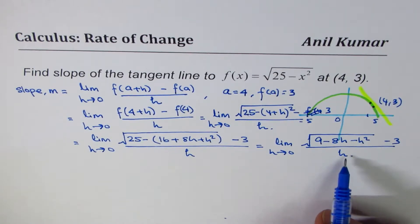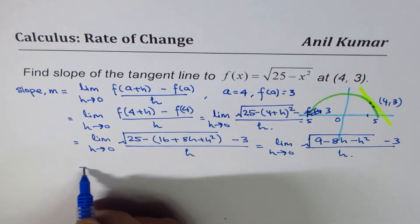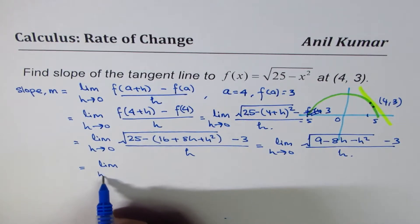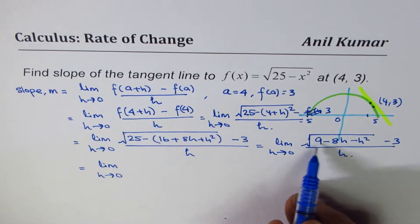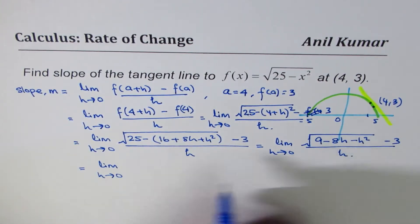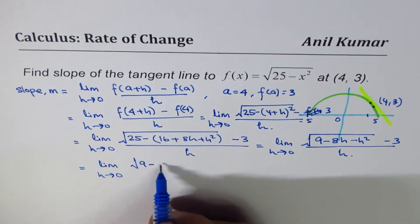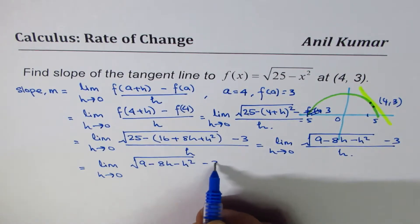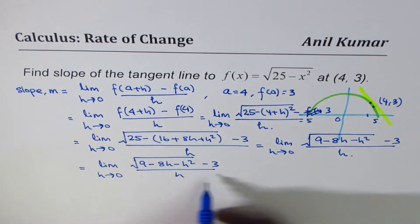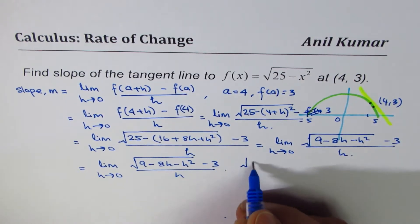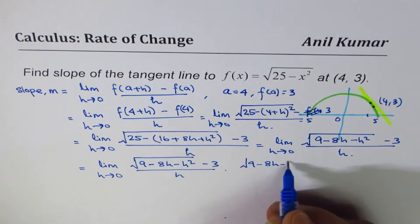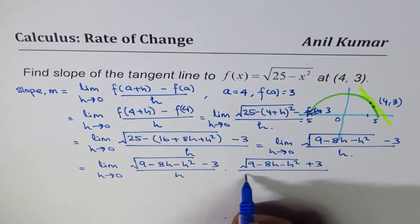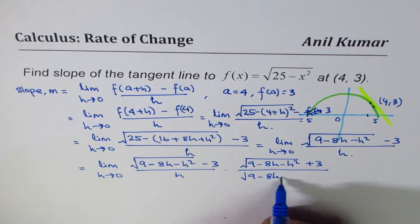Now to solve for this, we will rationalize the given expression. So we have limit h approaches 0. If you rationalize this, we get square root of 9 minus 8h minus h square, minus 3 divided by h, times conjugate of that, which is square root of 9 minus 8h minus h square, plus 3 divided by the same term.